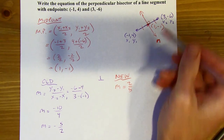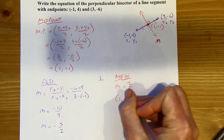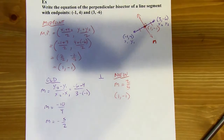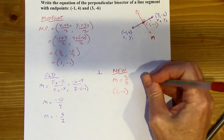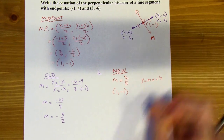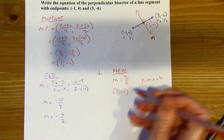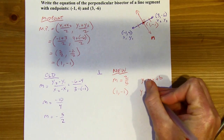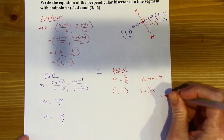For line N, I've got a through point (1, negative 1) and a slope of 2 fifths. I have enough information to write the equation. I'll write this in slope-intercept form: y equals mx plus b. I already know m is 2 fifths, so the equation is y equals 2 fifths x plus something. I just need to find b.